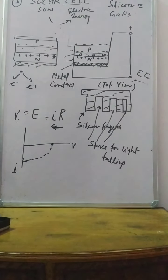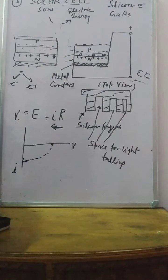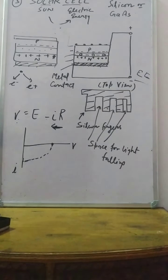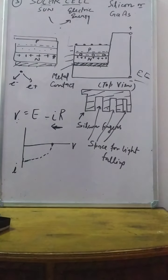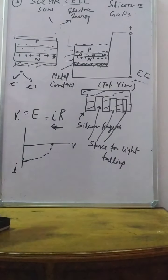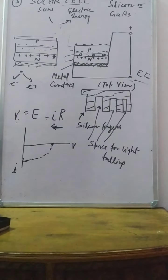This is the solar cell — a very important application seen in schools and industry. The sun has such potential that its energy can be converted into electricity, which can be extracted from the solar cell.